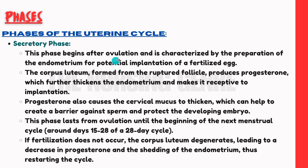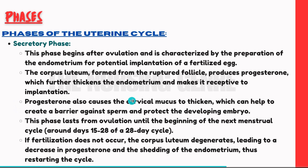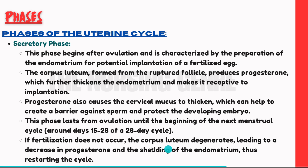The secretory phase begins after ovulation and is characterized by the preparation of the endometrium for potential implantation of a fertilized egg. The corpus luteum, formed by the ruptured follicle, produces progesterone hormone, which further thickens the endometrium and makes it receptive to implantation. Progesterone also causes the cervical mucus to thicken, helping create a barrier to protect the developing embryo. This phase lasts from ovulation until the beginning of the next menstrual cycle.